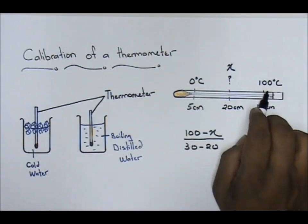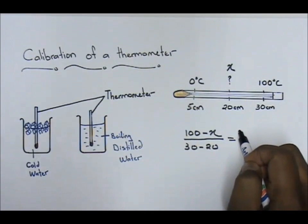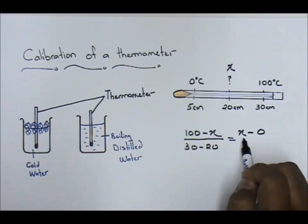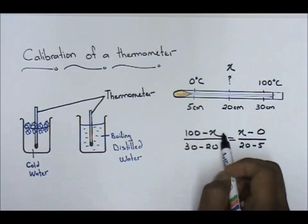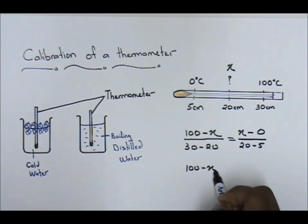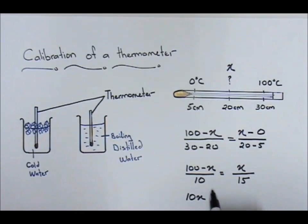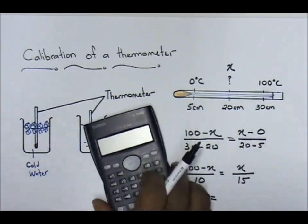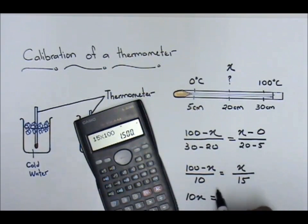So the first stage: (100 minus x) over (30 minus 20) equals to (x minus 0) over (20 minus 5). Solving this: 100 minus x, 30 minus 20 you'll get 10. X here, 20 minus 5 is 15. So 10x equals to 15 times 100, which is 1500, minus 15x.